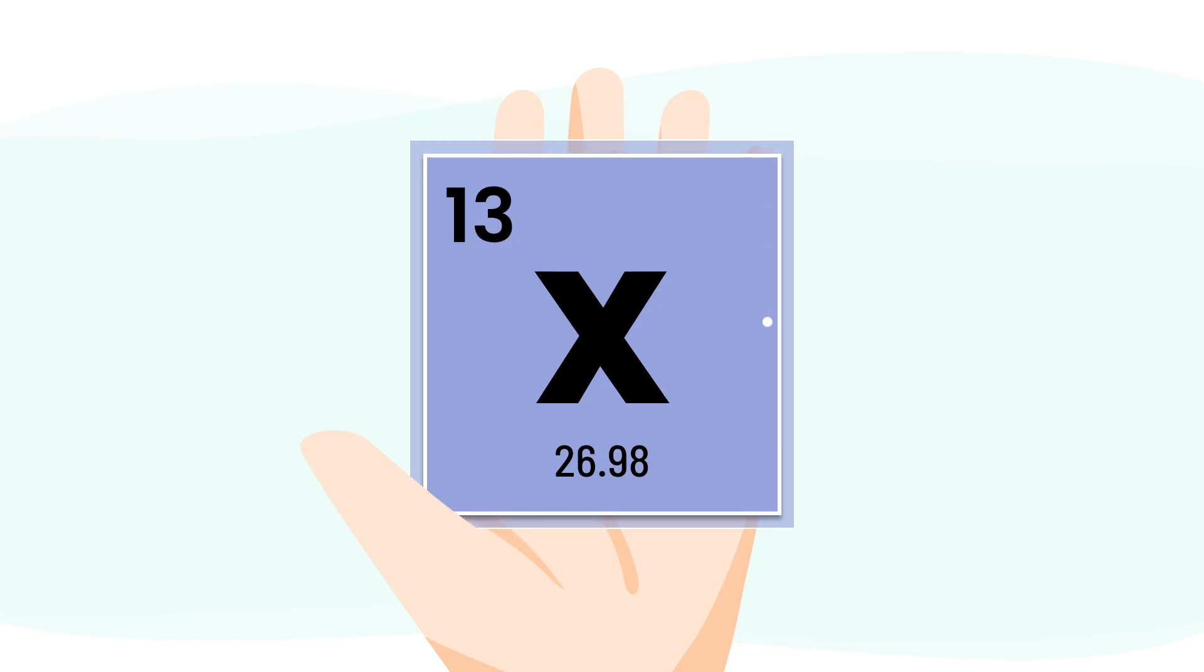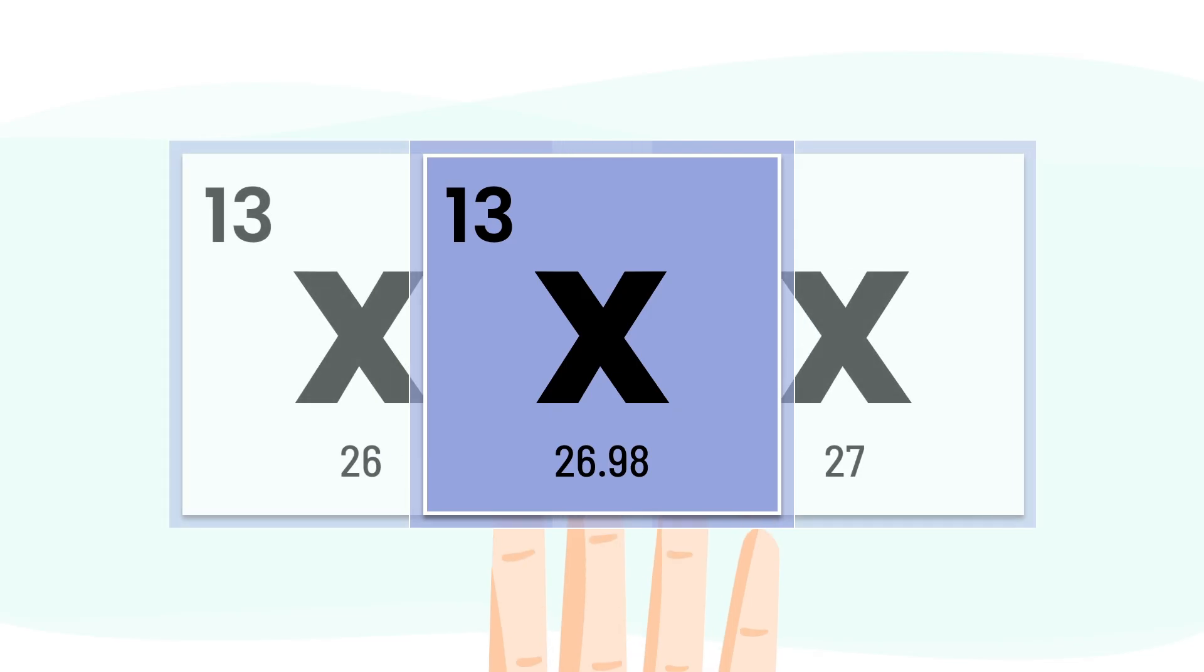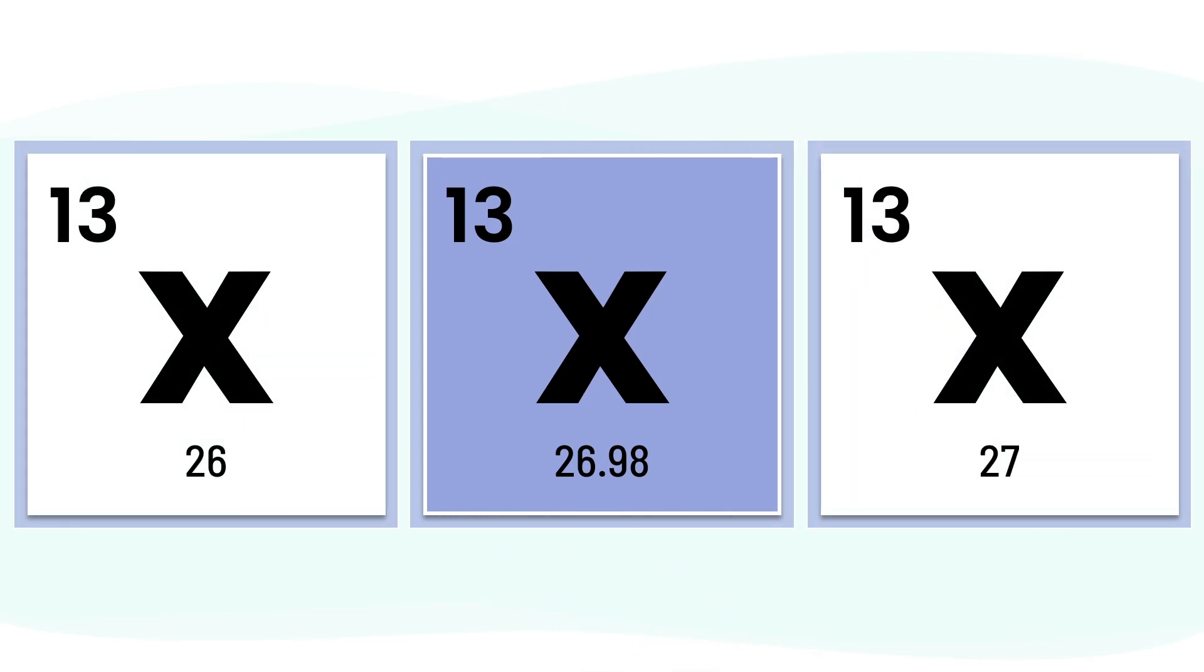This square is called an element tile, and reading it is like unlocking an atom's ID card. But here's the twist: some atoms have secret versions called isotopes, and that's where atomic math really begins. So let's crack the code together.